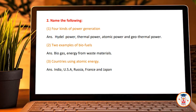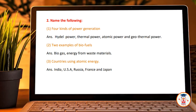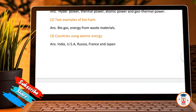Question number 2: Name the following. Four kinds of power generation: hydel power, thermal power, atomic power, geothermal power. Two examples of biofuels: biogas, energy from waste material. Third, countries using atomic energy: India, USA, Russia, France, Japan.